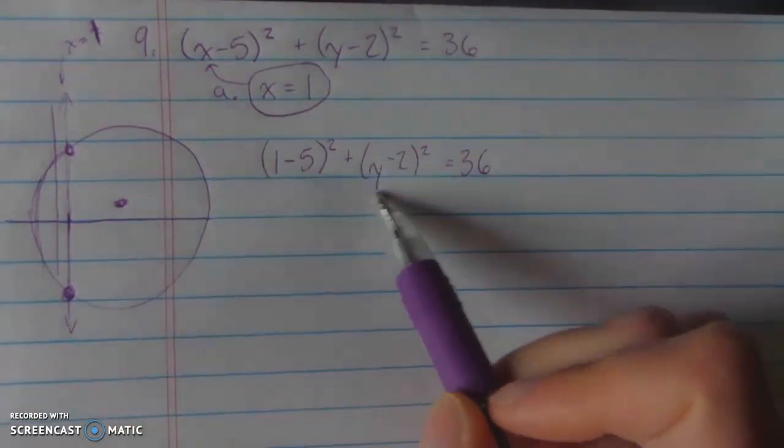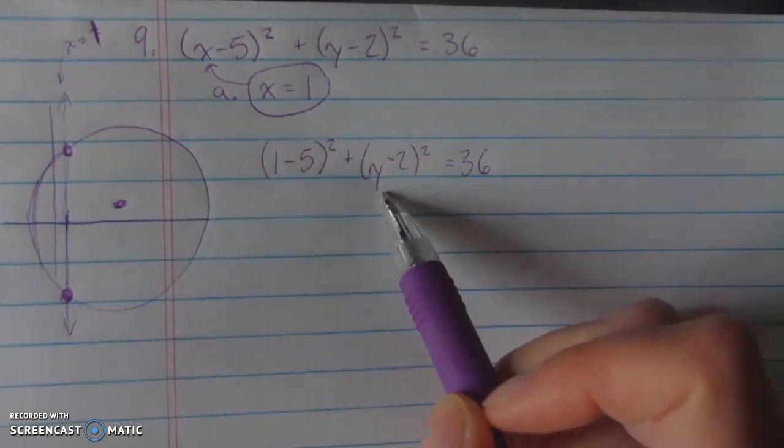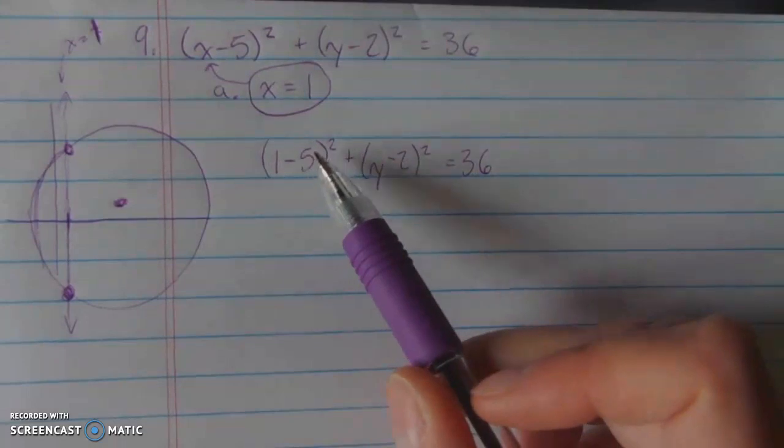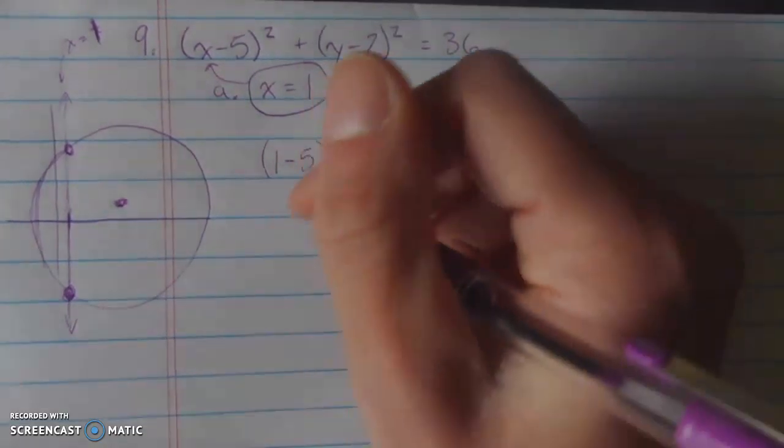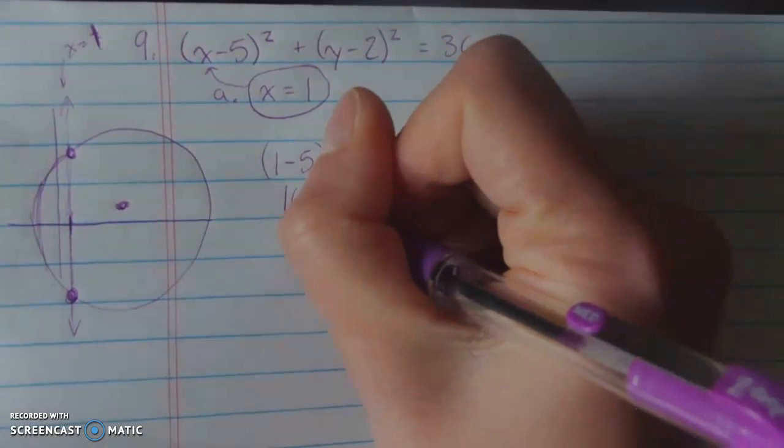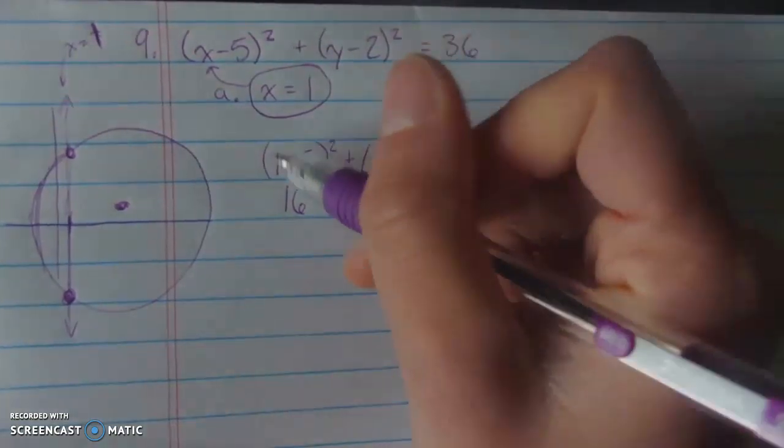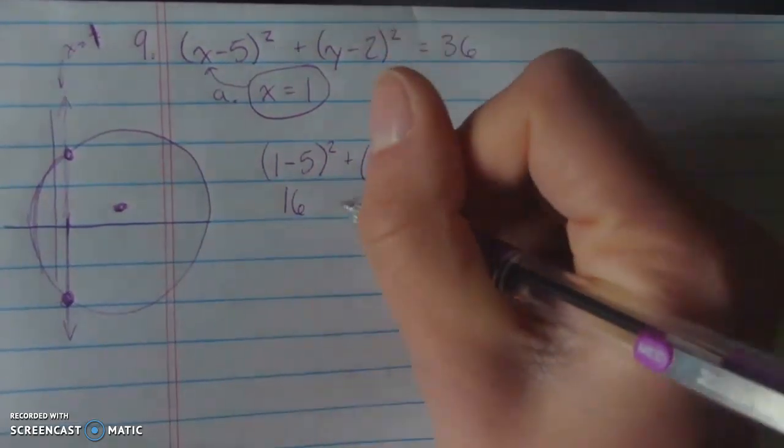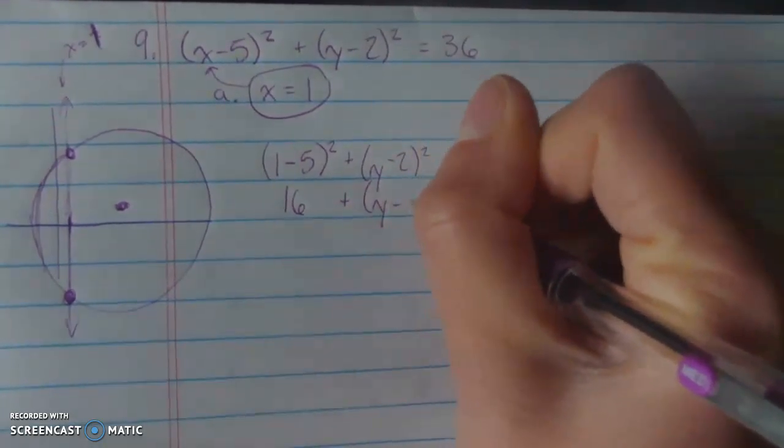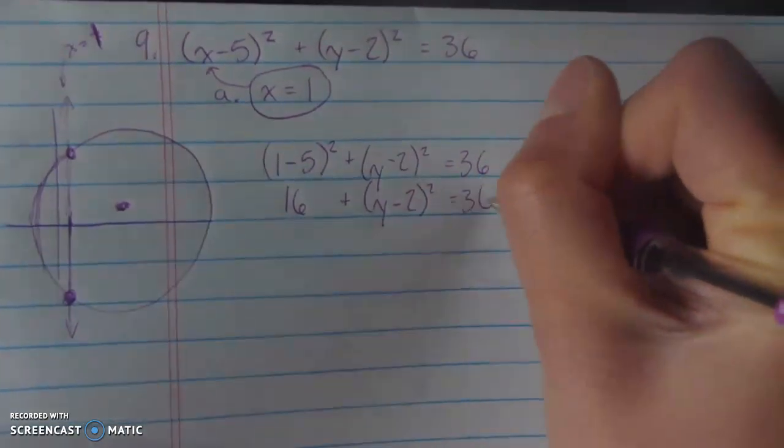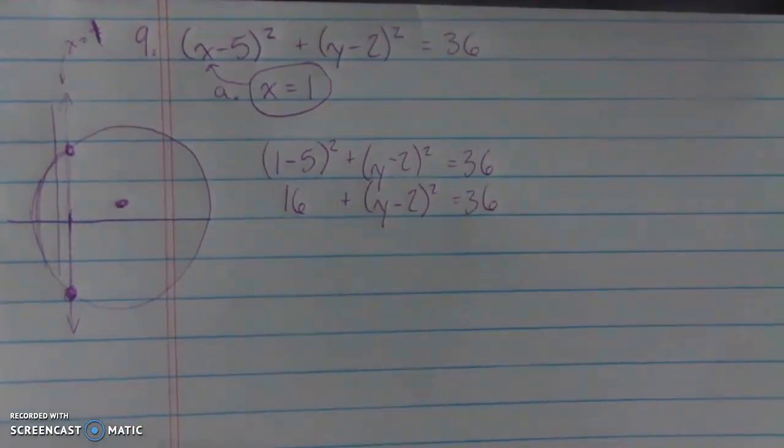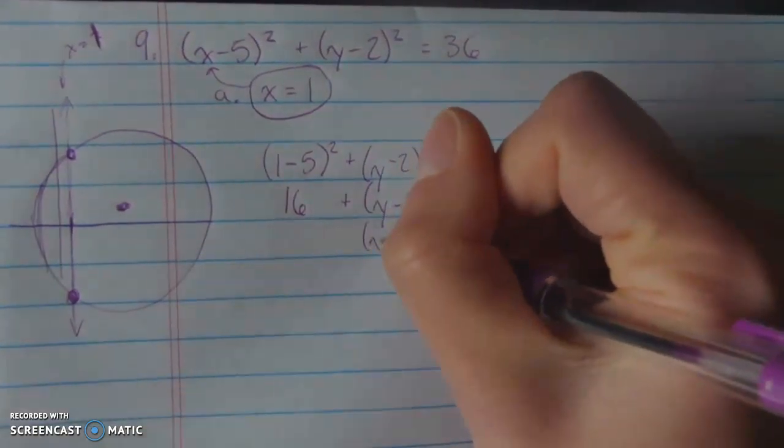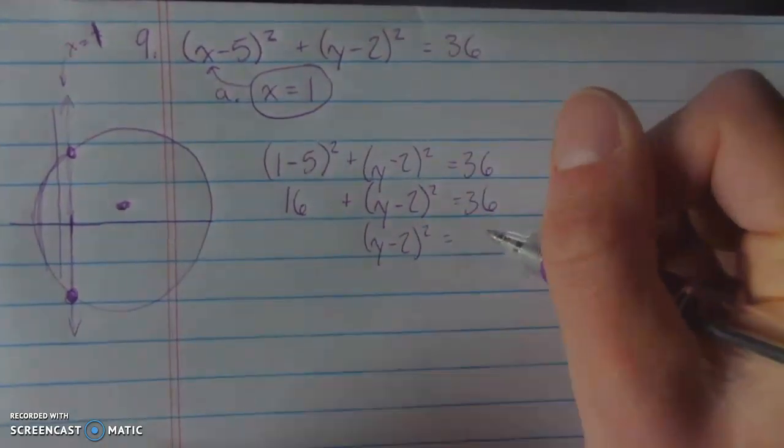And once I see this, this is exciting because all I have left is my y, and if I only have one variable, I can solve for it. So here, 1 minus 5 is negative 4, and negative 4 squared is 16. So that ends up with 16 plus y minus 2 squared is equal to 36. Next I subtract 16 from both sides, giving me y minus 2 squared is equal to 20.